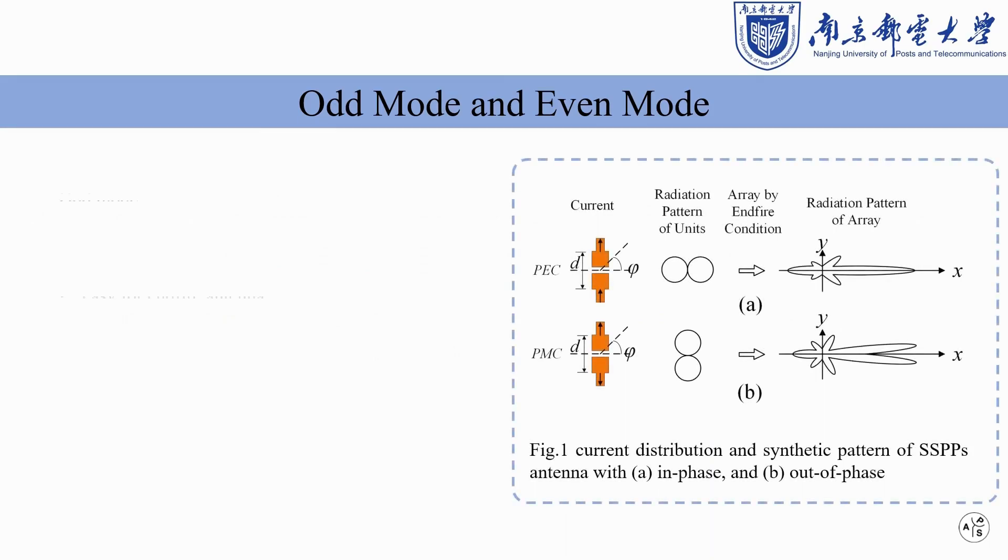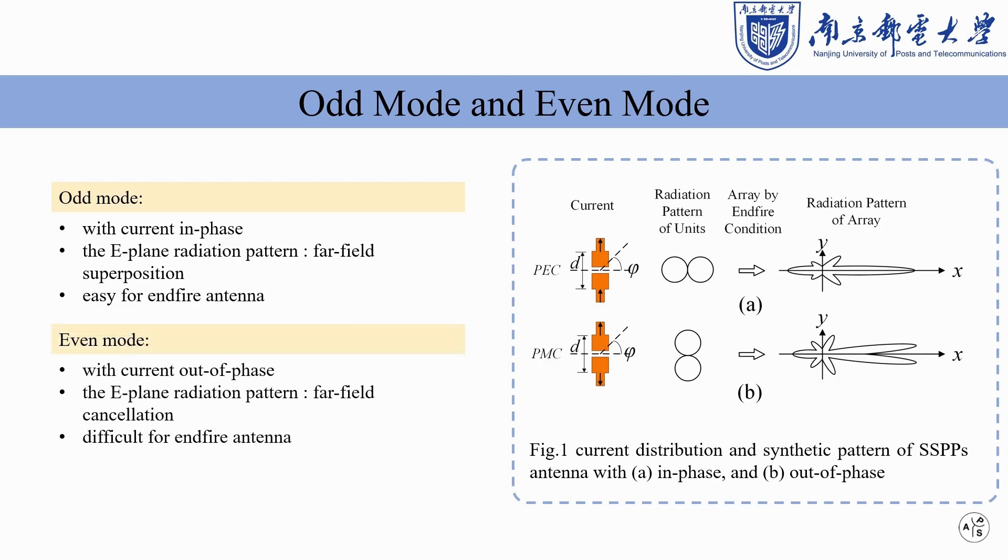For odd-mode SSPPs unit, the electric fields of the upper and lower elements are superimposed at x-axis direction. If we arrange the SSPPs units along the x-axis, an enhanced beam can be obtained at endfire direction.